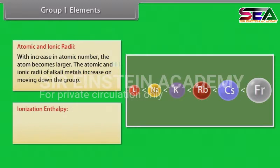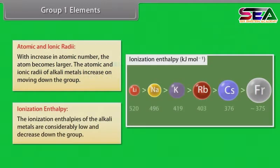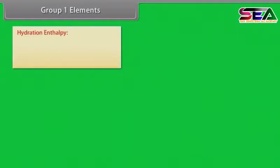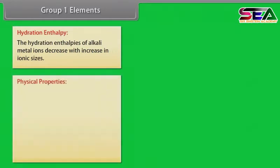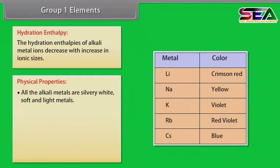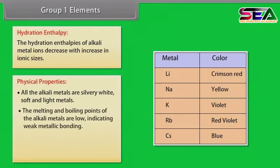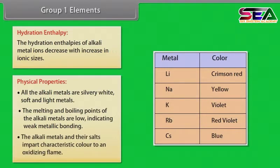The ionization enthalpies of the alkali metals are considered low and decrease down the group. The hydration enthalpies of alkali metal ions decrease with increase in ionic sizes. All the alkali metals are silvery white, soft and light metals. Their melting and boiling points are low, indicating weak metallic bonding. Alkali metals and their salts impart characteristic color to an oxidizing flame.